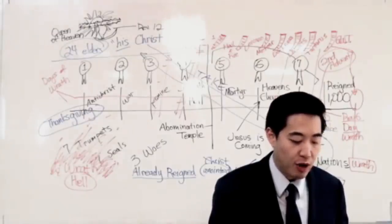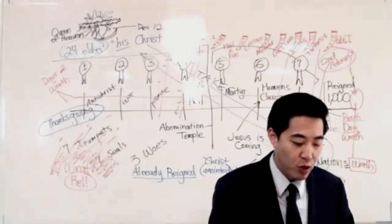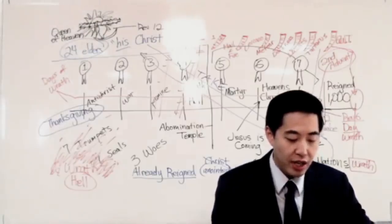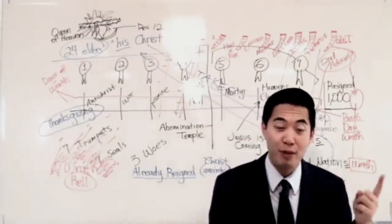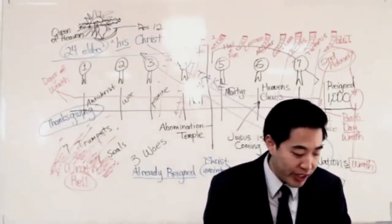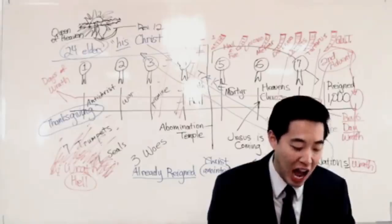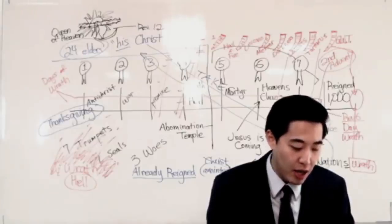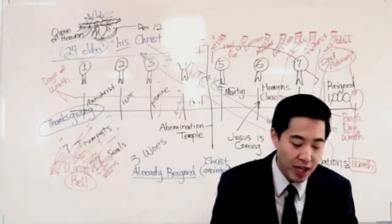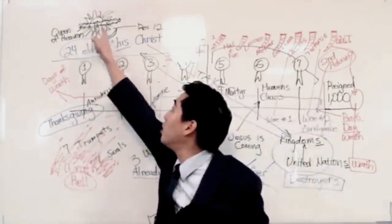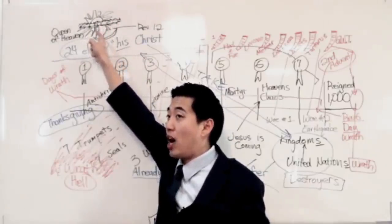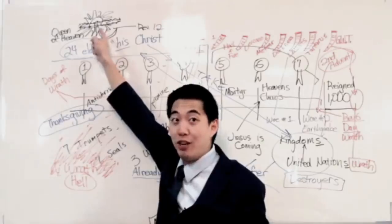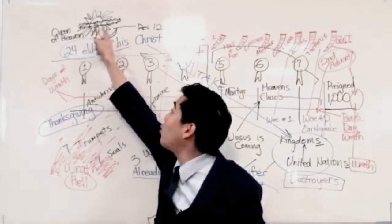He told it to his father and to his brethren, and his father rebuked him and said unto him. See, Jacob knew what that dream was referring to. He was referring to his whole family line, the Jews. What is this dream that thou hast dreamed? Shall I, see Jacob, and thy mother, and thy brethren, because Jacob has eleven brothers, there's your eleven stars, eleven tribes of Israel. But Joseph is the twelfth tribe, so there you're twelve.